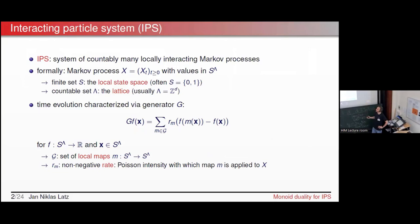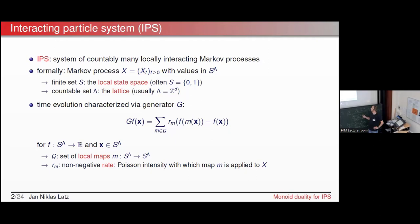In the context of this talk we think of an interacting particle system as a Markov process with values in some product state space S^Λ, where S is a finite set. This is a little different from the two talks before, where the local state space was the naturals; here we concentrate on finite S. In the most classical models — the contact process or the voter model — S consists of just two elements, zero and one, and Λ is a countable set, typically the integer lattice Z^d.